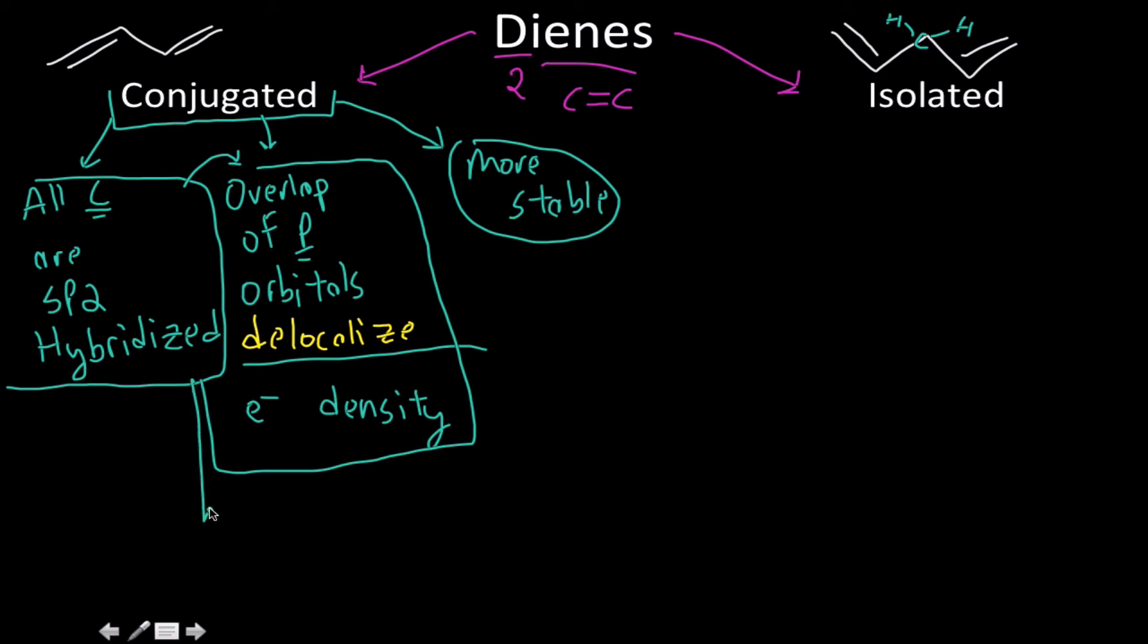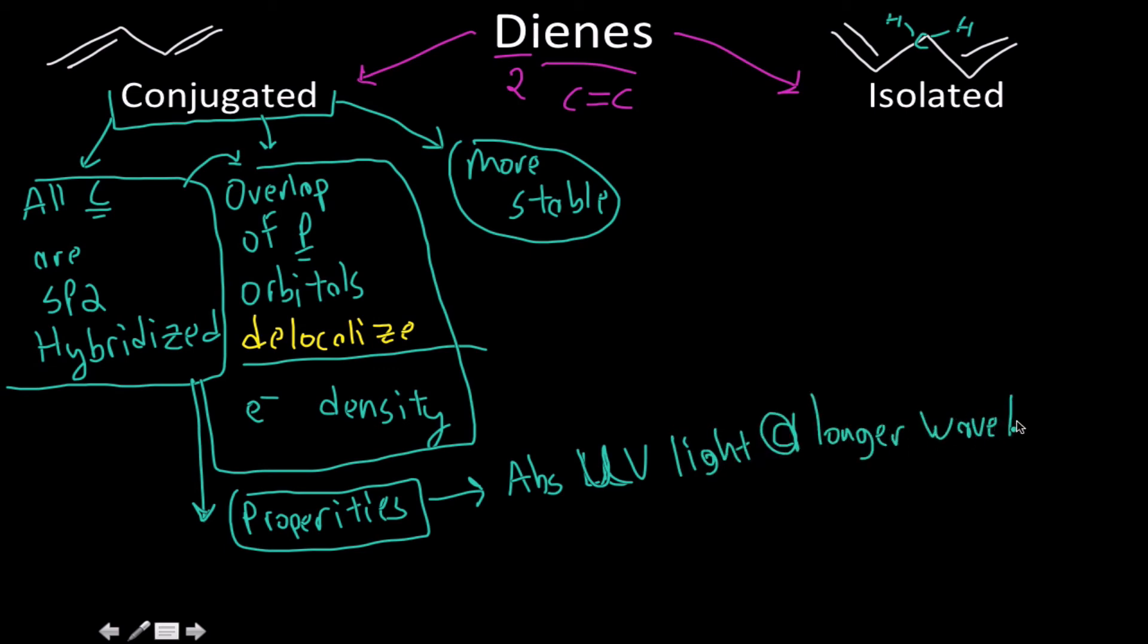So just some notes that we may want to also make, and I'm just going to make some properties that they have that are pretty cool, or properties about them, or structures that you could say about them. Besides the fact that they're more stable, is that they will absorb ultraviolet light at longer wavelengths than their isolated friends are.